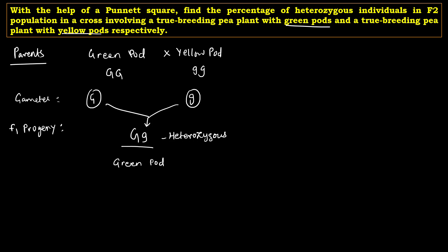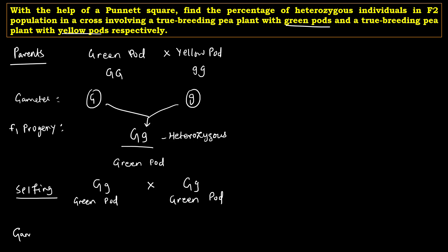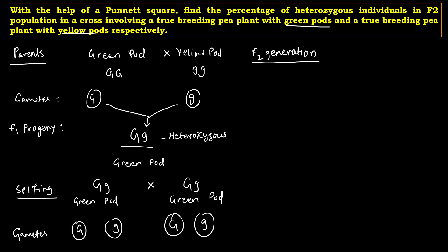We have to go for selfing of these F1 progeny. Here we cross capital G, small g with capital G, small g — one acting as male and one as female. Both parents have green pods due to the law of dominance, and the gametes are capital G, small g from each parent. From here we go for the F2 generation using the Punnett square, making the table.